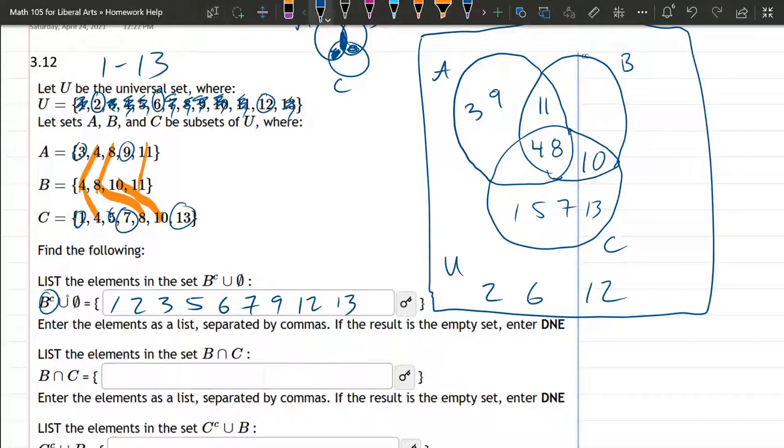So now we're going to list the elements in B intersect C, so common to B and C. This is actually pretty fast once you have a Venn diagram. B and C, it's that shape right there. So we have 4, 8, and 10. That's it. So you need to be in B and C. Some of these you can do without a Venn diagram. B intersect C, you can just look and see what's in common. But if there's 3 sets involved, you really want a Venn diagram that will help out a lot.